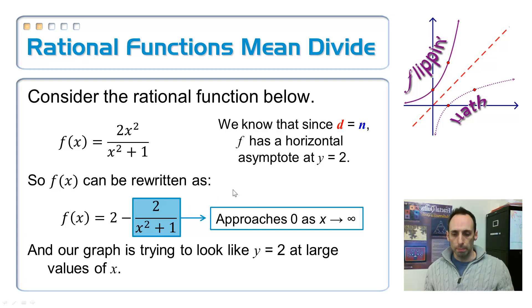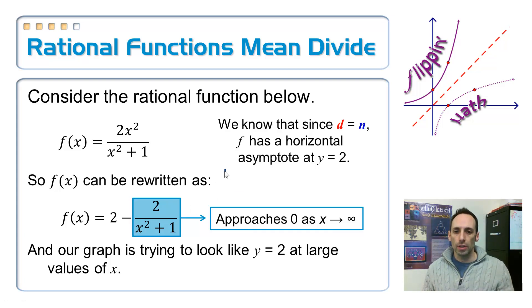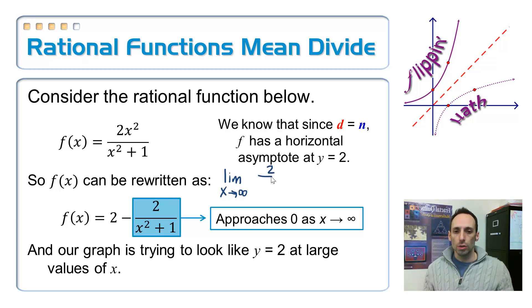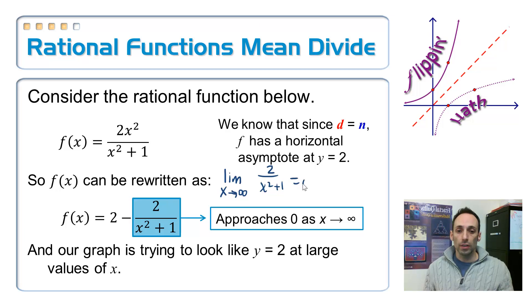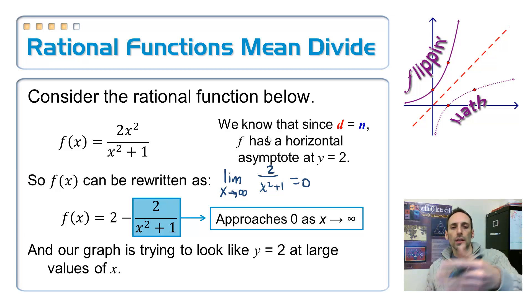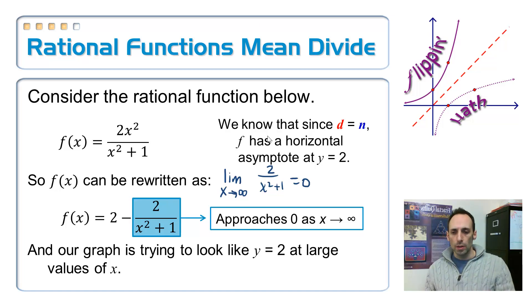Let me give you a sneak preview of some calculus terminology. The stuff in blue is how you'd see it in calculus - it would be written as lim as x approaches infinity of 2/(x² + 1). What we've just talked about is that this quantity is getting closer and closer to zero. That's exactly what a horizontal asymptote is asking us to find.